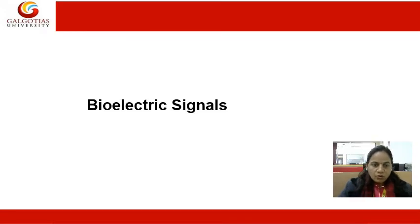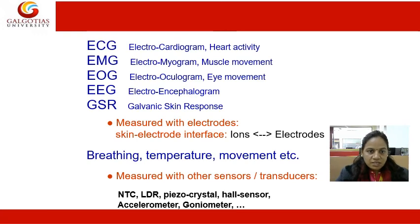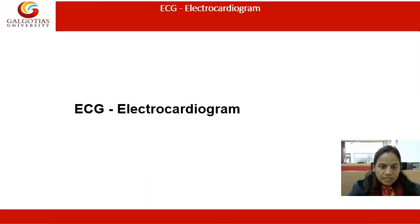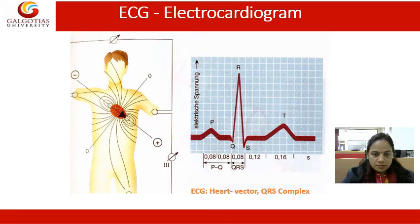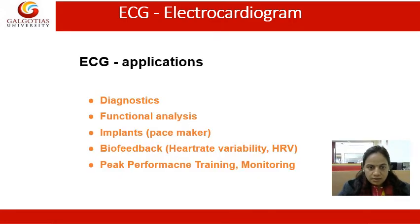Bioelectric signals include ECG and EMG — electrocardiogram and electromyogram. There are many ways to obtain bioelectric signals. For the ECG electrocardiogram, the heart vector and QRS complex can be seen, and how this particular ECG can be obtained as graphical data is shown here. The ECG can be plotted and recorded in this way.